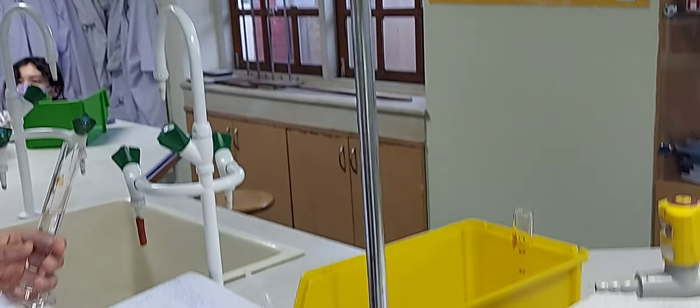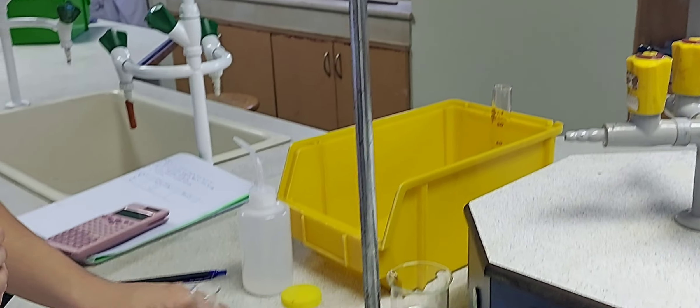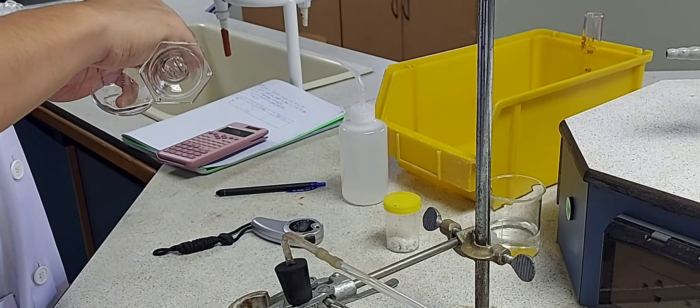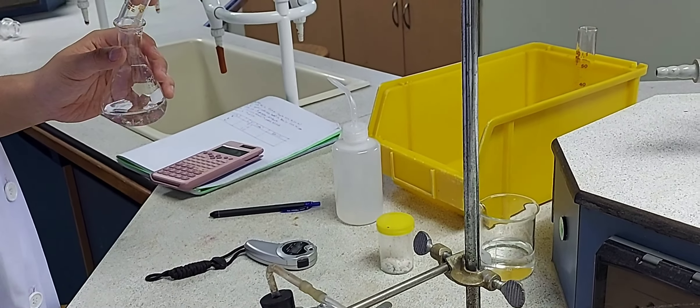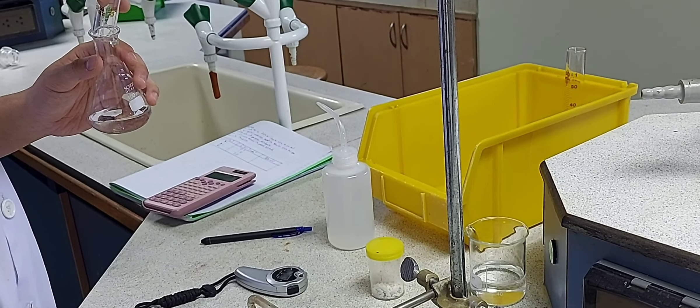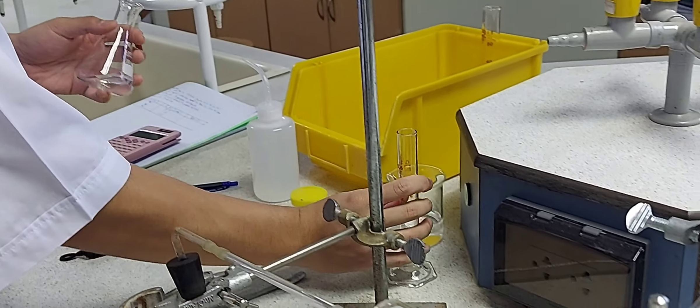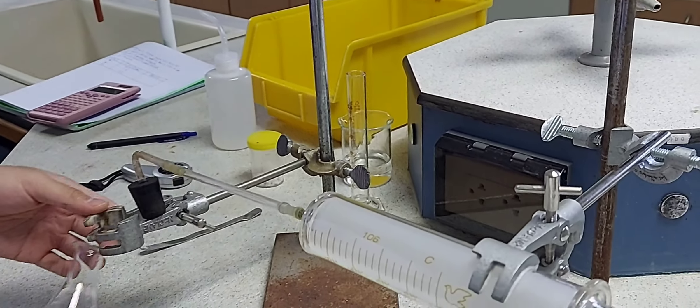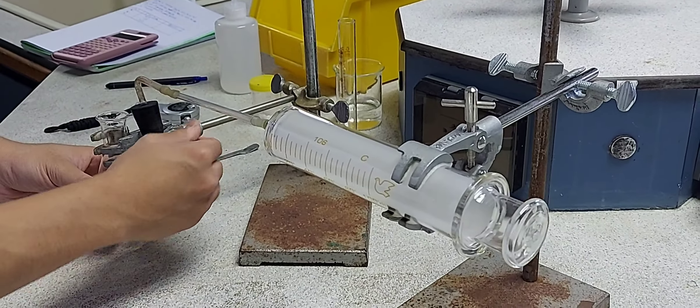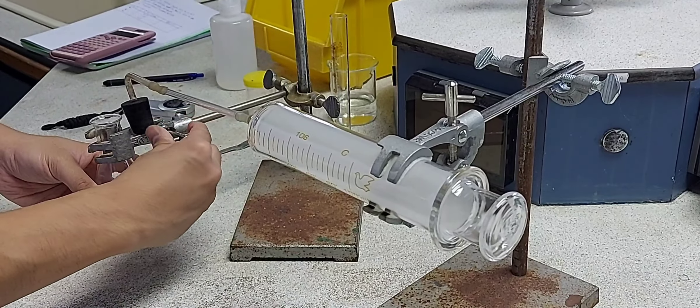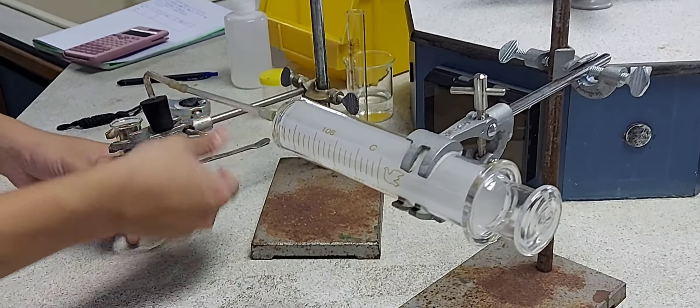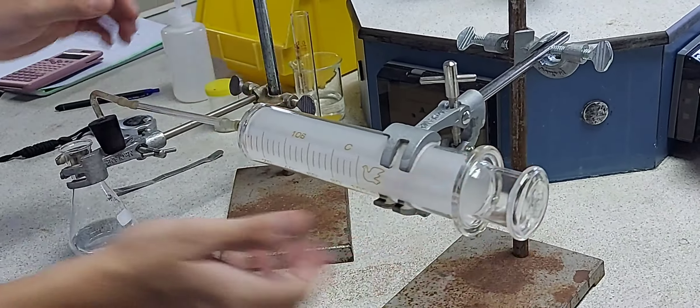This is an experiment to demonstrate the order of the reaction. In this experiment, we are taking 25 centimeter cubed of hydrochloric acid, 0.5 mole per dm³ concentration, and to this we will be adding one spatula measure of calcium carbonate or marble chips.